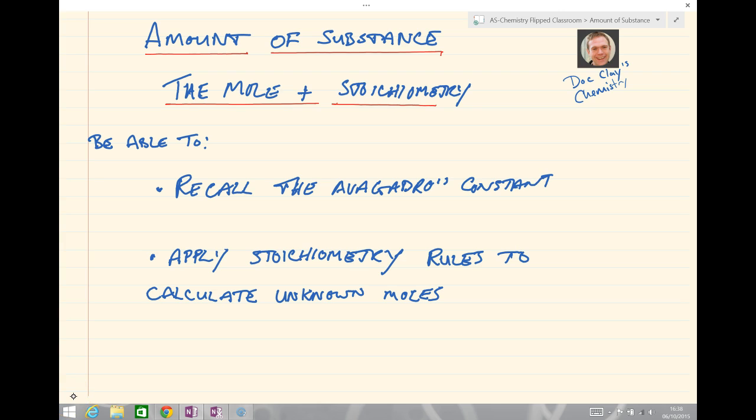Just to recap what we've seen in amount of substance, the mole and stoichiometry. We've been looking at Avogadro's constant, 6.023 times 10 to the 23, seeing what it means, and then importantly we've been applying the stoichiometry rules to calculate unknown moles in equations and that can be really important when we work out molar ratios later on. Okay catch you next time.